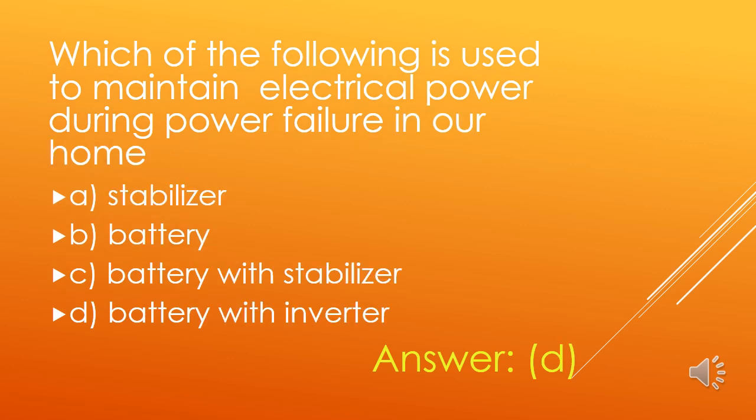Which of the following is used to maintain electrical power during power failure in our home? A. Stabilizer, B. Battery, C. Battery with Stabilizer, D. Battery with Inverter. We use battery backup with inverter to retain electrical supply during power failure. So, option D is the right answer.